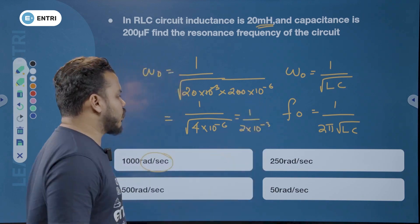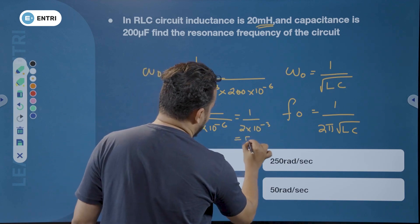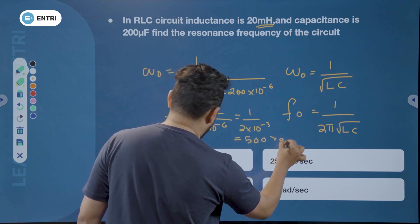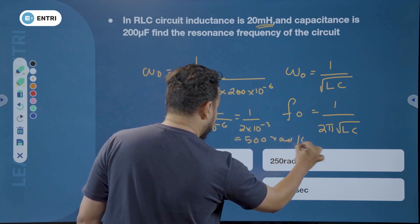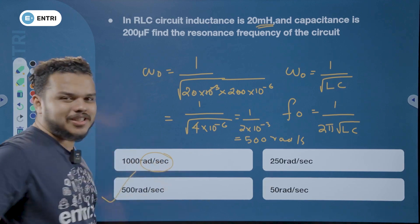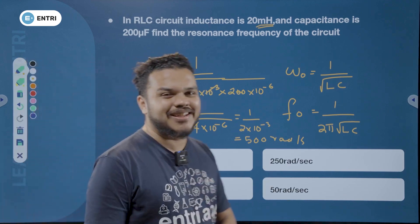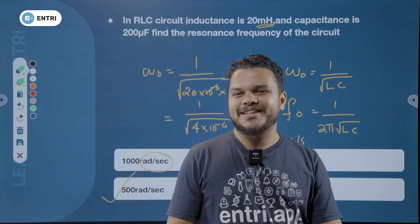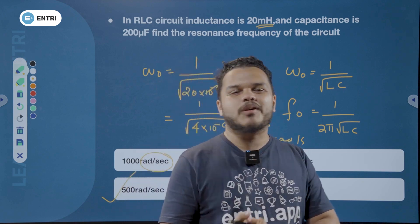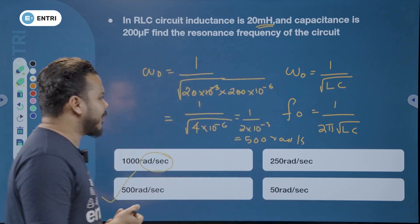We get 1000 by 2, which is equal to 500. So the answer is 500 rad per second. The correct answer is Option C: 500 radian per second, which is the angular resonating frequency.